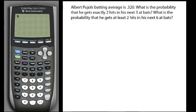So in this case, the two outcomes are either Albert gets a hit, or he does not. And the repeated events are he's going to go up to bat a number of times, in this case, three times.